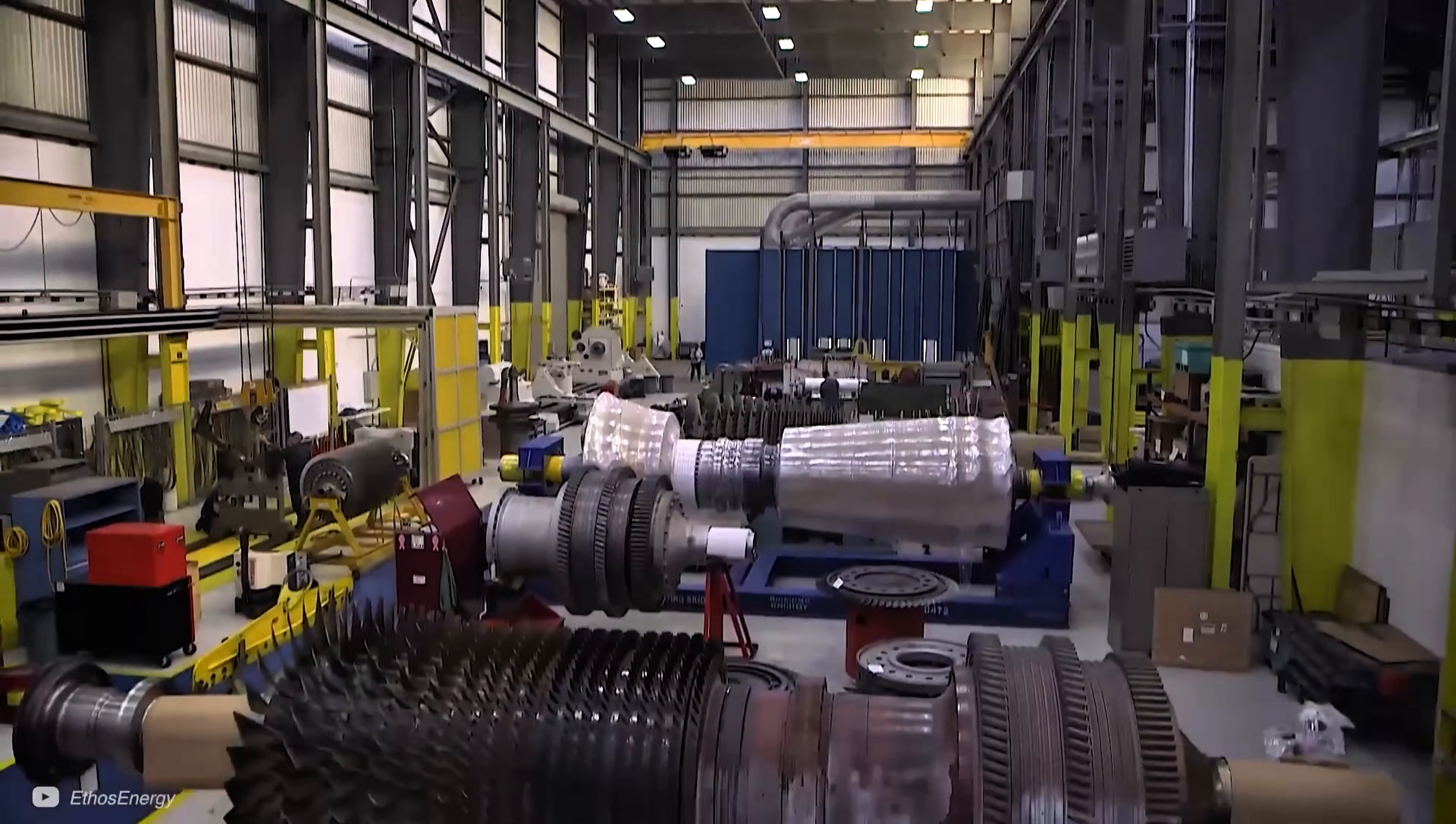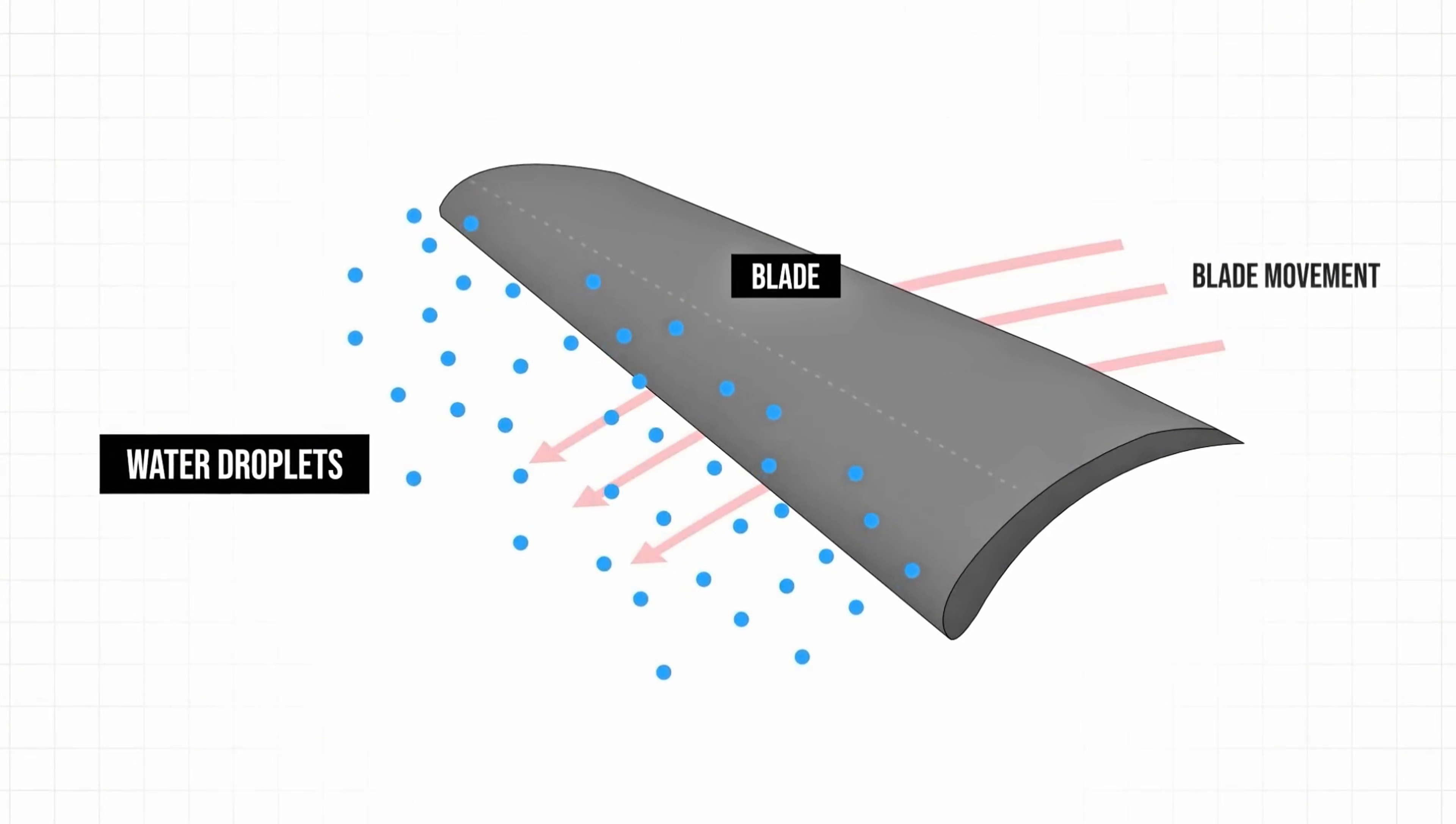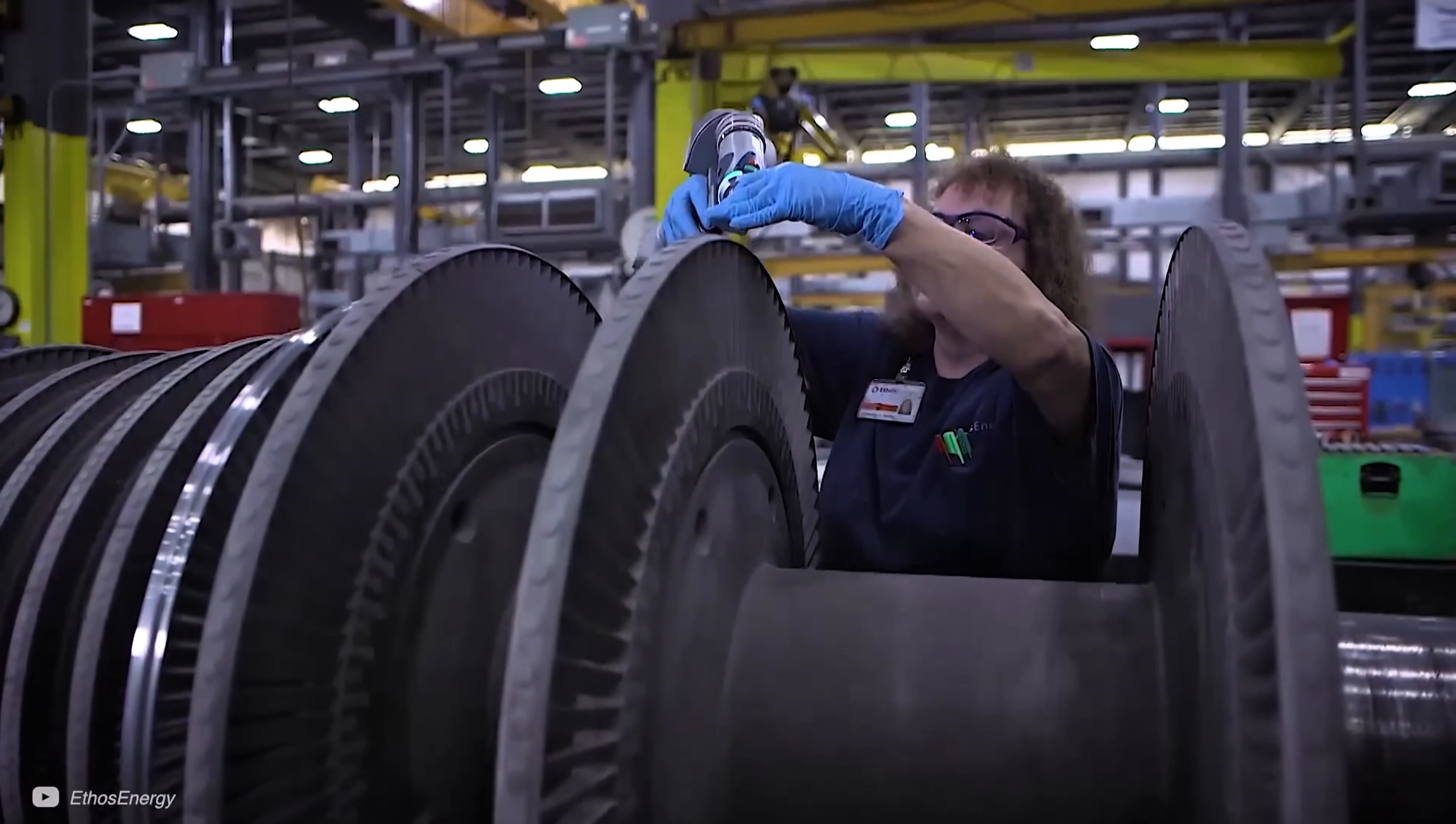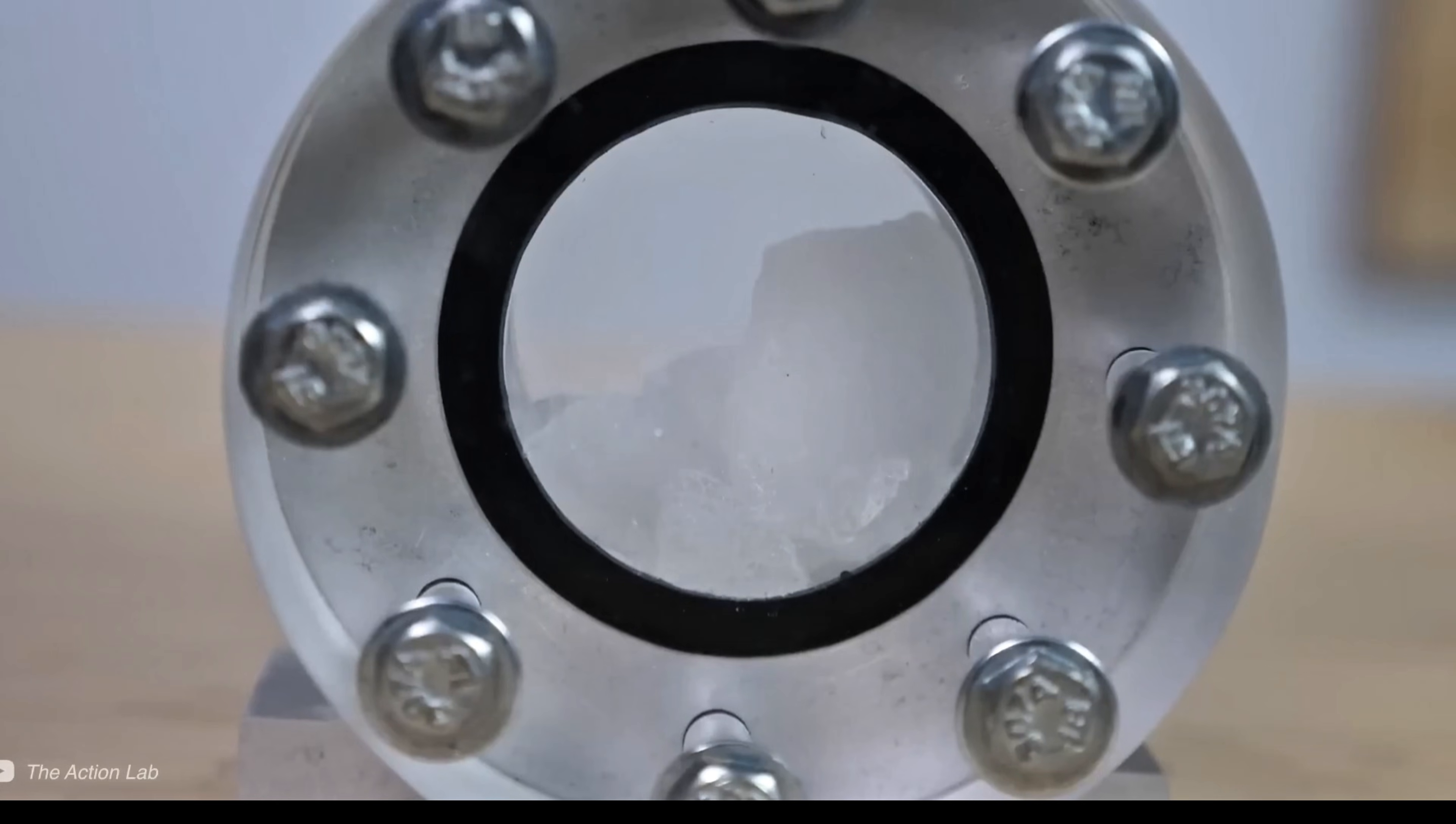Here's how the supercritical CO2 turbine cycle works step by step. First, the CO2 gas is squeezed by a compressor pump. Compressing it to high pressure actually heats it up a bit, physics of compression, so the fluid enters the next stage already warm. This compression step is analogous to the compressor in a jet engine. Unlike steam, which changes from liquid to vapor, CO2 stays in one supercritical phase, so no energy is lost in a phase change.